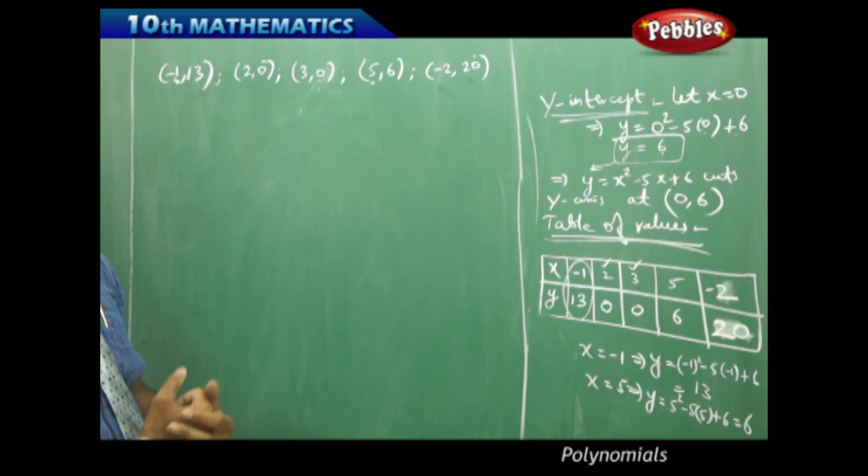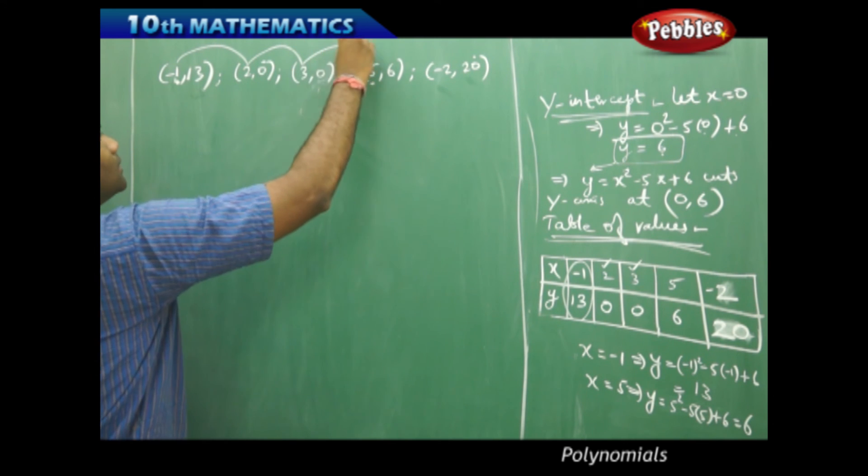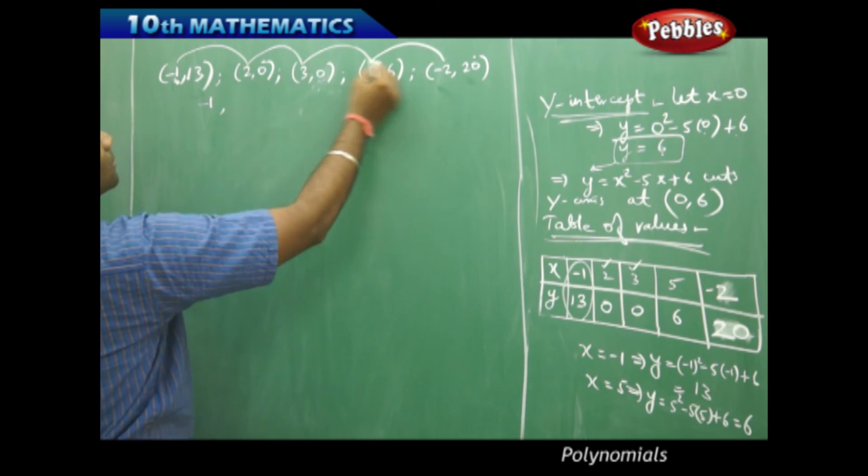Now, as I find the coordinates here as obtained from the table, I find that when I take all the x coordinates, then I clearly see that the lowest is minus 1 and the highest is 5.